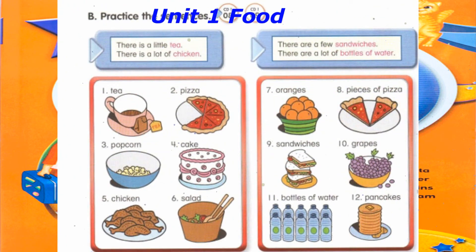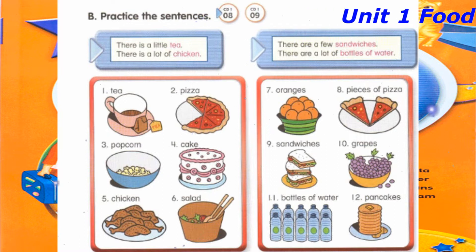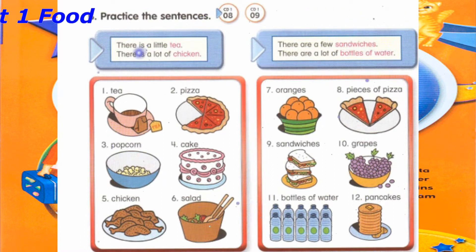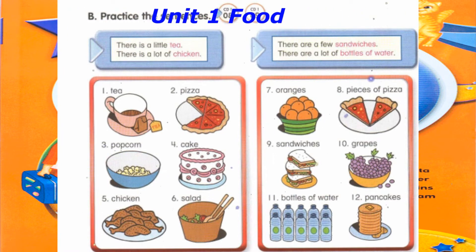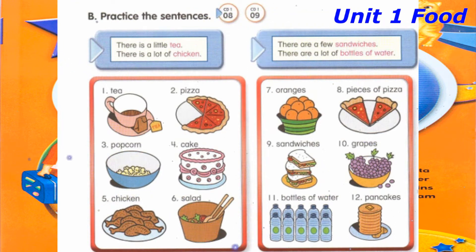Track 8. B. Practice the sentences. There is a little tea. There is a lot of chicken. There are a few sandwiches. There are a lot of bottles of water.